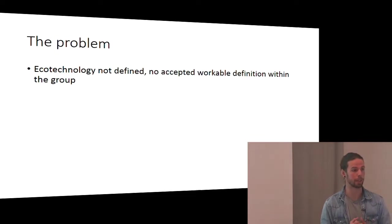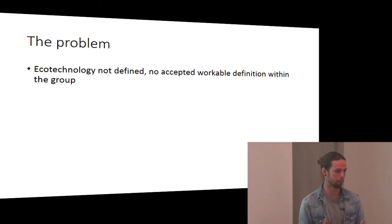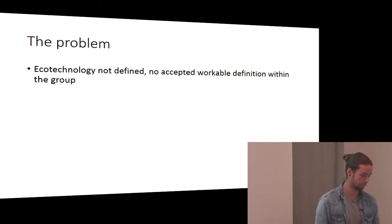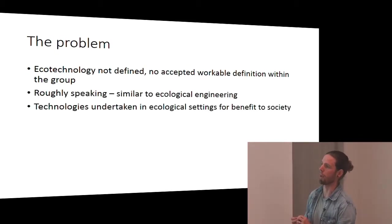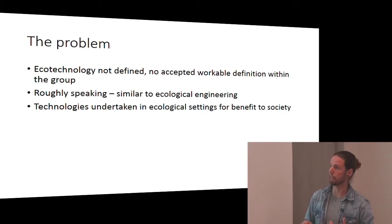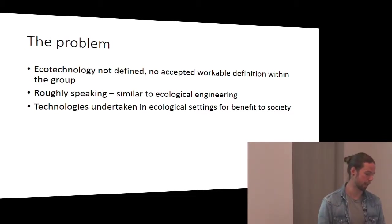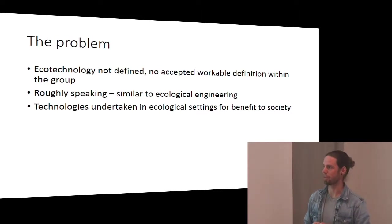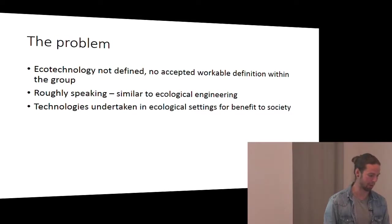The first part of a systematic map or review is to establish the search and all of these definitions and make sure that everybody is singing from the same hymn sheet. We knew roughly what was meant — everybody roughly knew what was implied. It's a similar term to ecological engineering; it's basically technologies undertaken in ecological settings for the benefits of society. But anybody who works with definitions knows that you can't use the word 'technology' or 'ecological' if the term you're trying to define is ecotechnology.